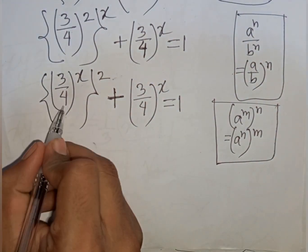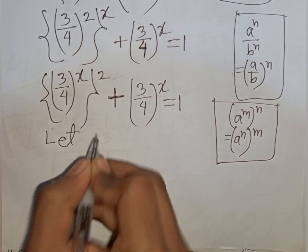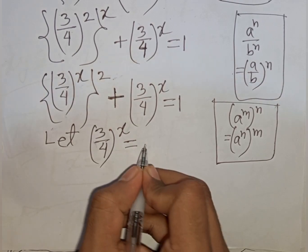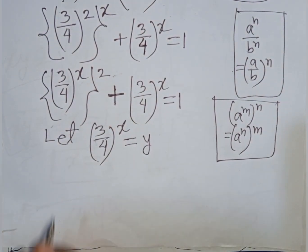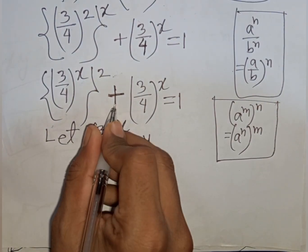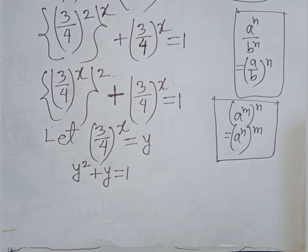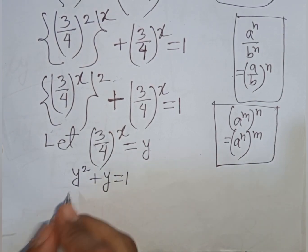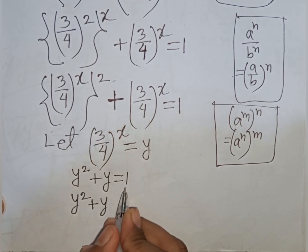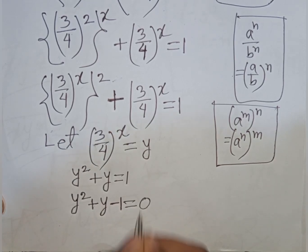We see (3/4)^x appears in both terms. So let y = (3/4)^x. Our equation becomes y² + y = 1. Moving the 1 to the left side gives y² + y − 1 = 0.